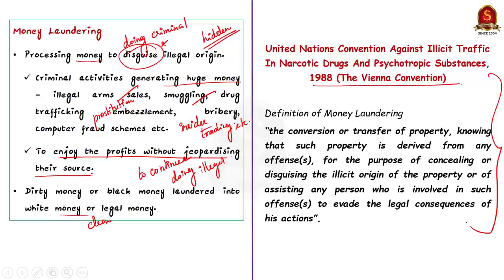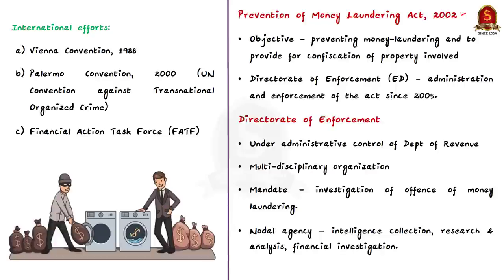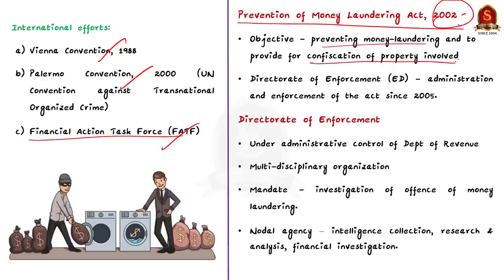The money laundering activity not only disguises the source of money, but it also changes the form. It moves the fund to a place where they are less likely to attract attention. Several efforts have been taken globally and nationally to fight money laundering. It includes efforts like Vienna Convention 1988, Palermo Convention of 2000, and the Financial Action Task Force FATF. India also enacted the Prevention of Money Laundering Act in 2002. The act also aims to provide for confiscation of property derived from money laundering.